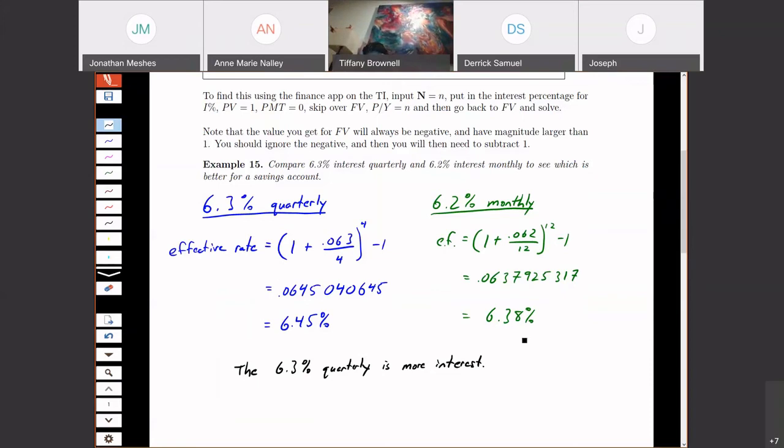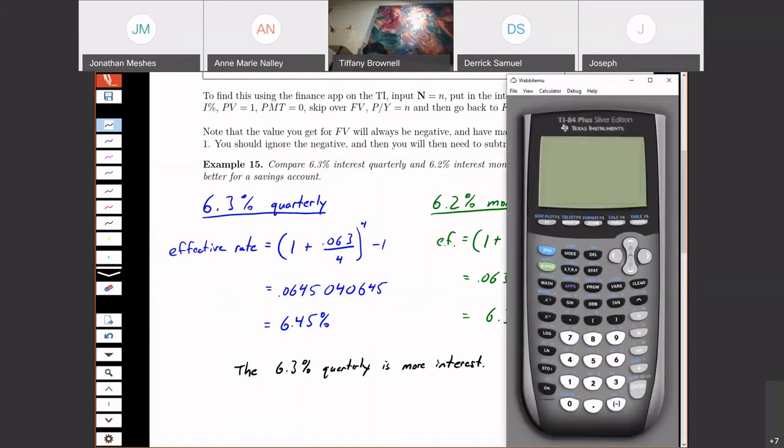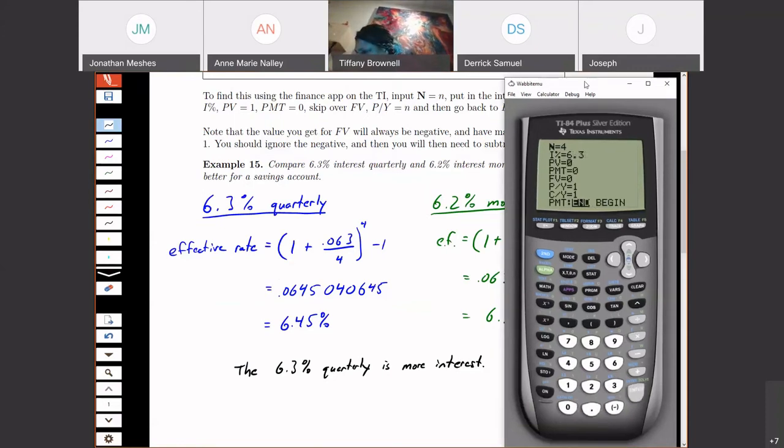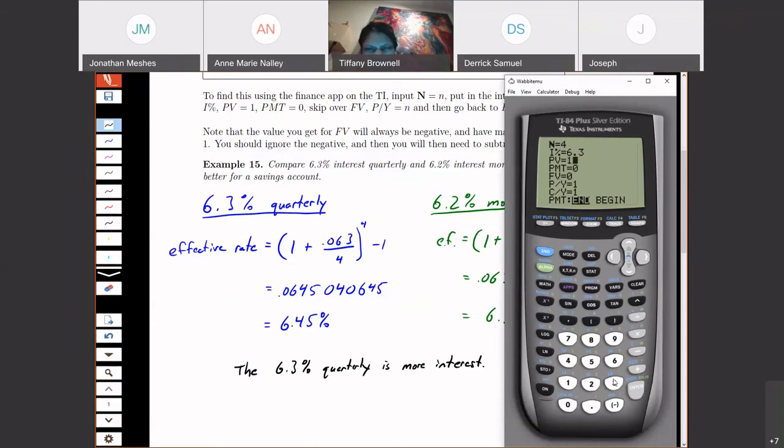Now, what I want to do is also show you how you can use your calculator to get these numbers if you're using that built-in finance app. So what I do is I hit the app, finance, TVM solver. And what I'm going to do is I'm going to just treat this as being one year. So if I'm looking at quarterly, this would be just four times one or four. My interest rate is 6.3%. And what we're going to do is we're going to imagine that we just start with $1. And the payments per year is four.